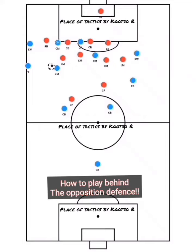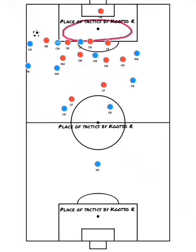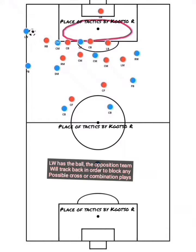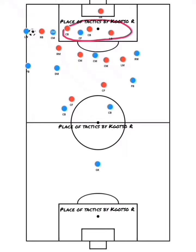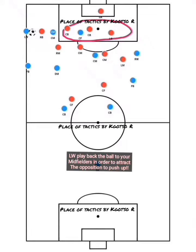How to play the ball behind the opposition defense. The target is this space I have circled. If the ball is played to our left wing, the opposition defense will drag back in order to block any possible cross or combination passes.